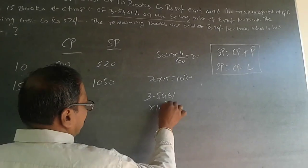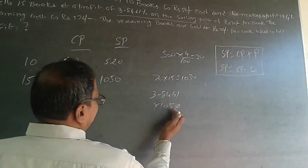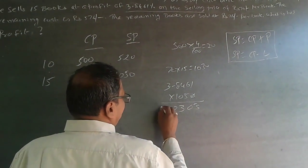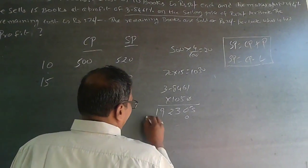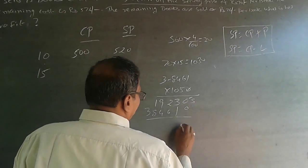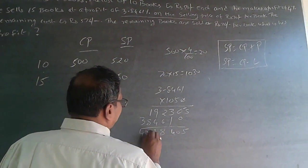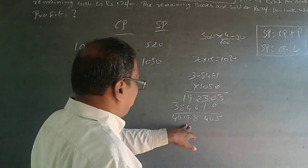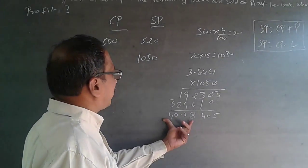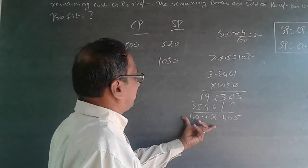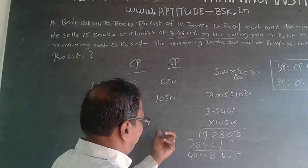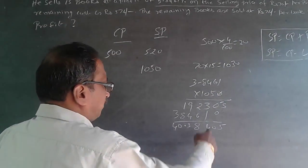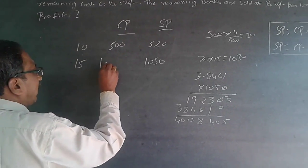The profit of 3.8461 percent is on the selling price of 1050. Calculating 3.8461 percent of 1050 gives approximately Rs. 40.38. So the cost price of these 15 books is 1050 minus 40.38, which equals approximately Rs. 1009.62.